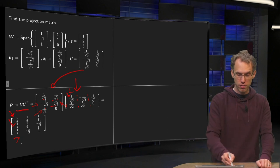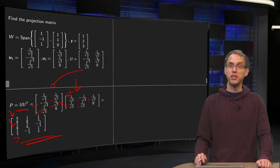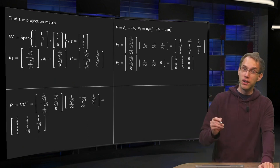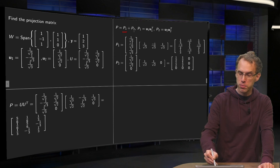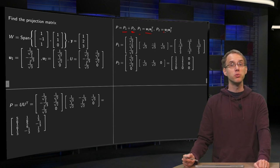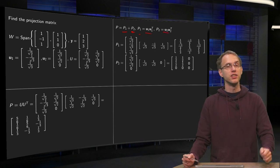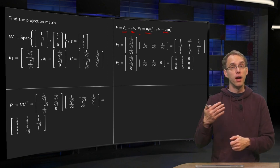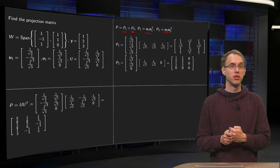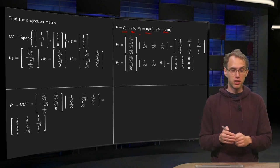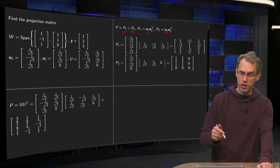So there you already have a projection matrix P. Now let us do it in the second way as well. We can write P as P1 plus P2, where P1 equals u1 times u1 transpose and P2 equals u2 times u2 transpose. The advantage is that P1 will be the projection matrix onto u1, P2 will be the projection matrix onto u2, and the sum of the two will be the projection matrix onto W. So let us compute P1.